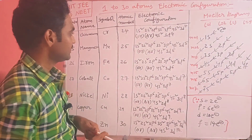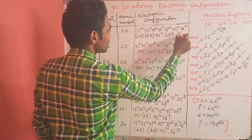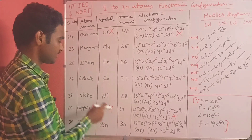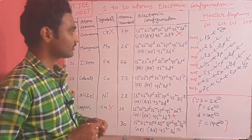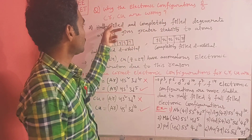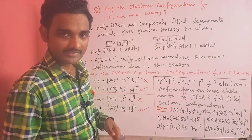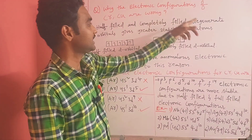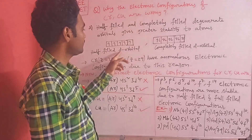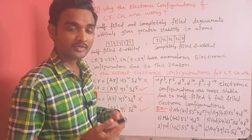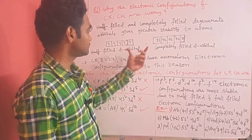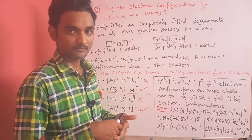If you observe properly, the electronic configurations of chromium and copper that we wrote are wrong. Why are these two wrong? The answer is: half-filled and completely filled degenerate orbitals give greater stability to the atom. Except for these two arrangements, the remaining orbitals are not as stable. So half-filled and completely filled orbitals provide extra stability.